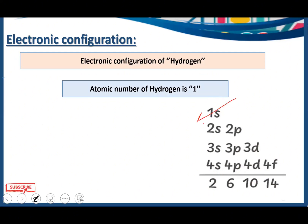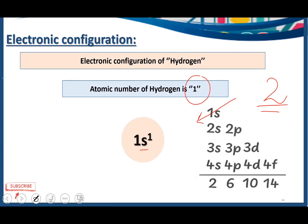First, we are going to arrange the subshells by cutting them as we need to write the electronic configuration according to energy levels — the subshells are arranged according to their increasing energy levels. So at first comes 1s. The atomic number of hydrogen is 1, so we are just going to accommodate one electron. The electronic configuration of hydrogen is 1s1.